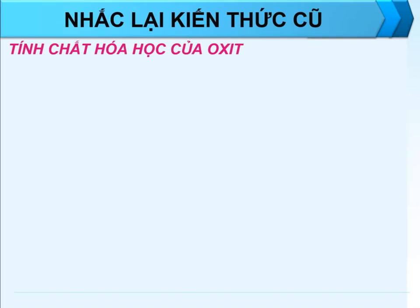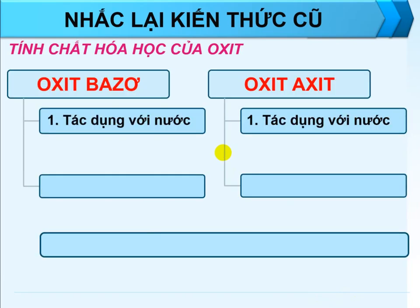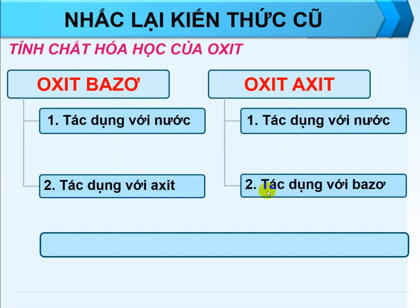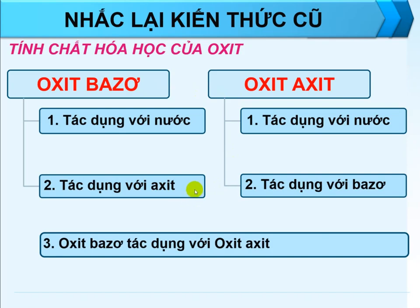Trước khi sang bài mới, thầy sẽ nhắc lại kiến thức cũ để giúp các em có thể nhớ được kiến thức cũ và chúng ta sẽ học tốt được hơn kiến thức mới. Chúng ta cùng nhau ôn lại tính chất hóa học của oxit. Oxit gồm có 3 tính chất hóa học: Thứ nhất, tác dụng với nước - cả oxit bazơ và oxit acid đều có tính chất chung này. Tính chất thứ 2, oxit bazơ sẽ tác dụng với acid; và ngược lại, oxit acid sẽ tác dụng được với dung dịch bazơ. Tính chất thứ 3, 2 loại oxit sẽ tác dụng với nhau: oxit bazơ tác dụng với oxit acid.